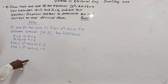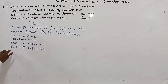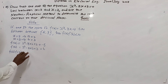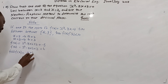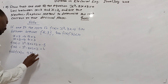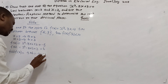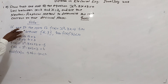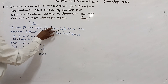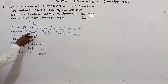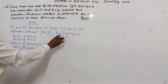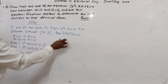Now you can see that if we take f(a) multiplied by f(b), this will be -5 times 6, which equals -30, which is less than 0. So we have proved that one of the roots of f(x) lies between 2 and 3, because the product of f(a) and f(b) is less than 0.